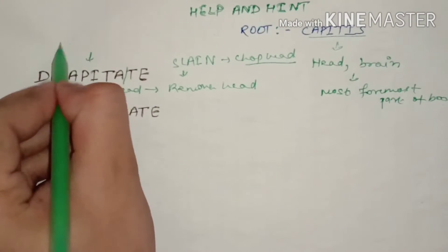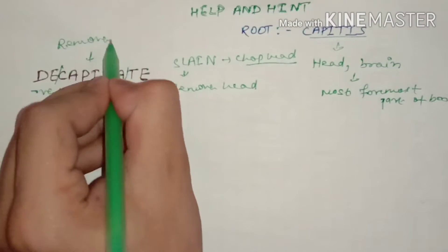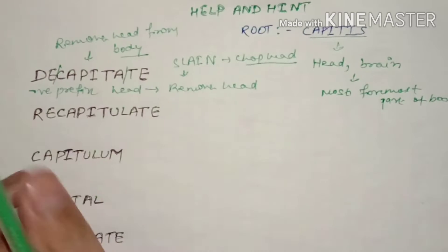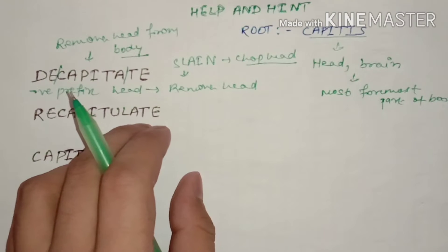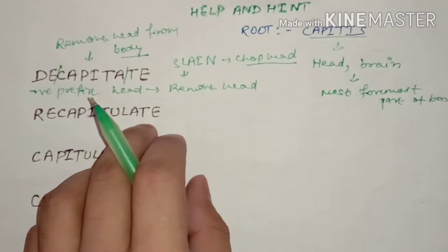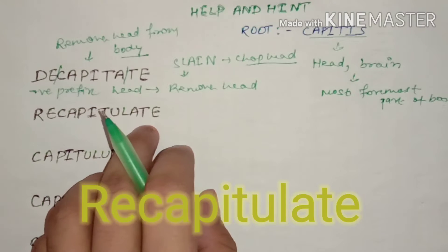Remove head from body is called decapitate. Traditionally and generally in slaughterhouses the heads of animals are decapitated because they are removed from the body.